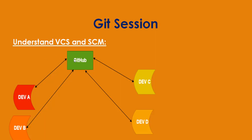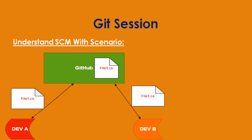Finally, the code of every developer is saved in the central place called GitHub. Now let's understand what SCM is with an example. SCM stands for source code management. In this example, Dev A and Dev B are back-end developers, and there is one file called File1.cs stored in GitHub.